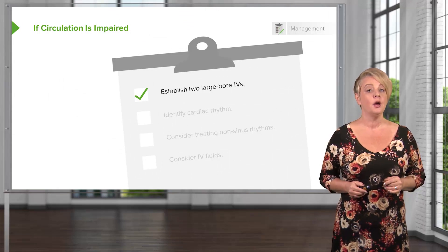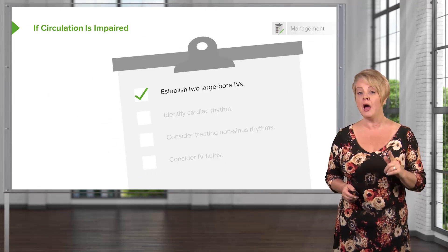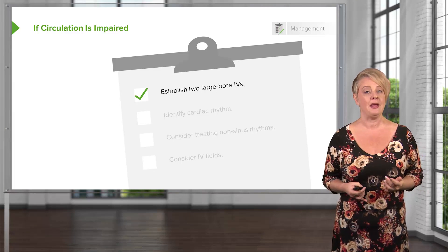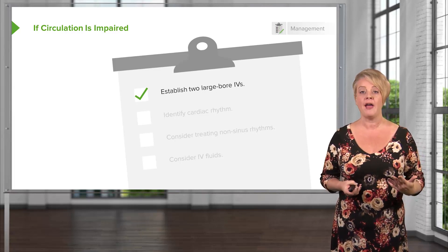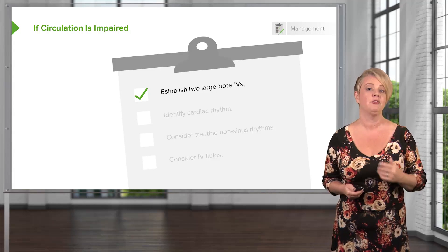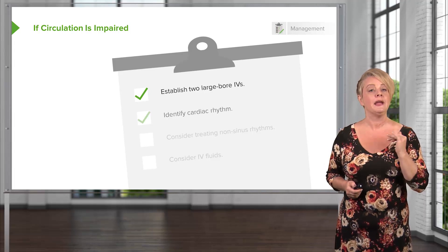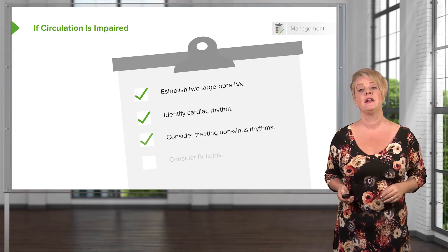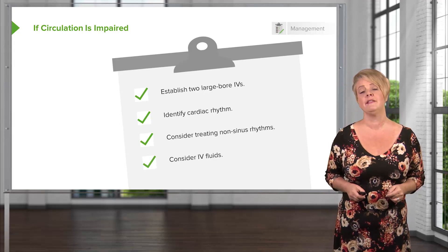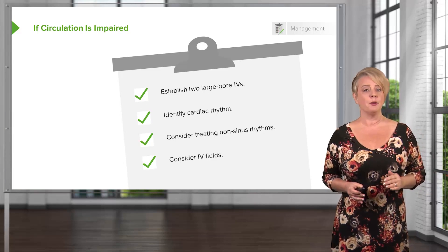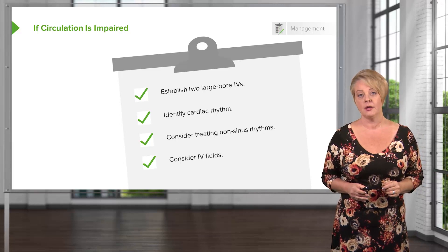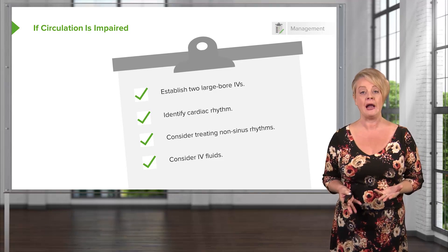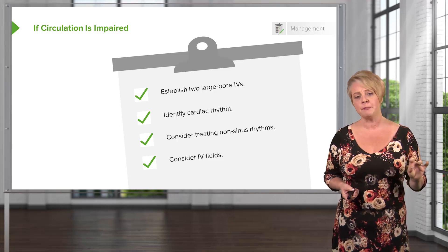Anytime we suspect a problem with C, we want two large-bore IV catheters — not one, but two — so we have the ability to rapidly infuse fluid or blood products, and a backup in case one infiltrates or falls out. We want to look at the monitor and differentiate non-sinus from sinus rhythms; if they have a non-sinus rhythm, think about treating it. Lastly, consider IV fluids. Not every patient with a circulatory abnormality needs IV fluids, but the vast majority will benefit. There are exceptions like cardiogenic shock where pump failure is the underlying problem and fluid won't help, but in most cases, optimizing intravascular volume is the first step in stabilizing C.